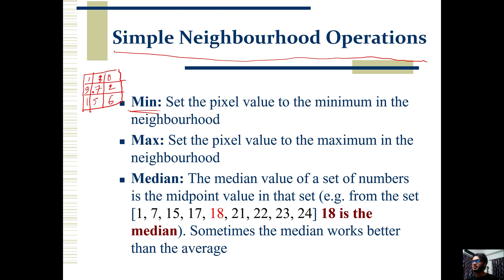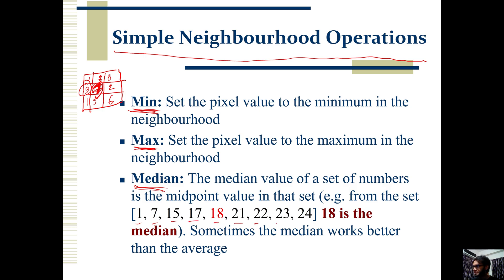We can have a minimum pixel value — for example, the minimum pixel value is 1. We can also have a maximum pixel value — for example, the maximum pixel value is 9. So with a mean filter, we take all nine values and compute the average.